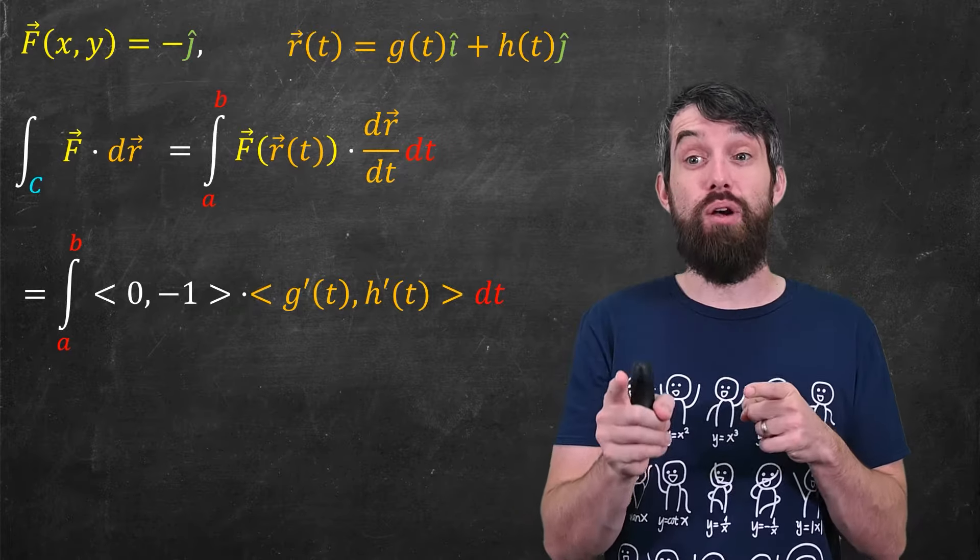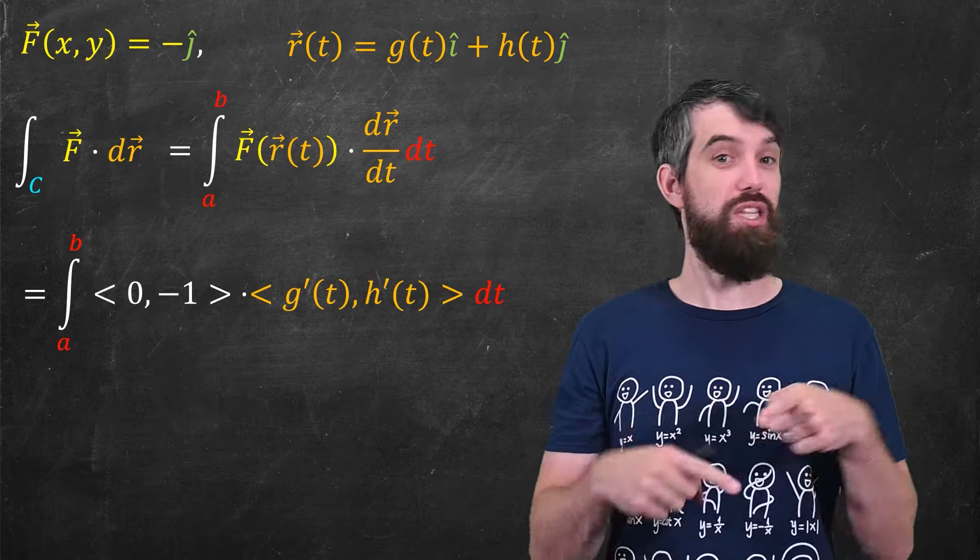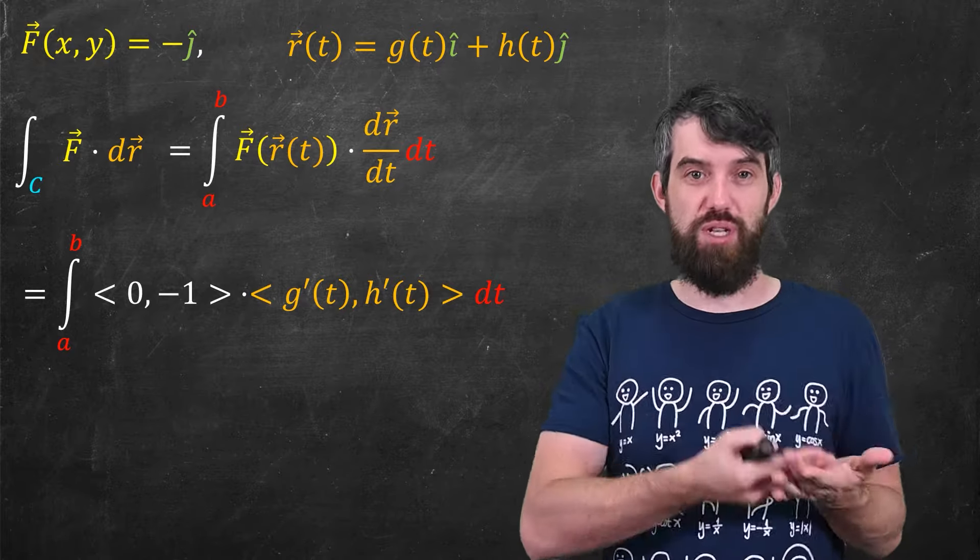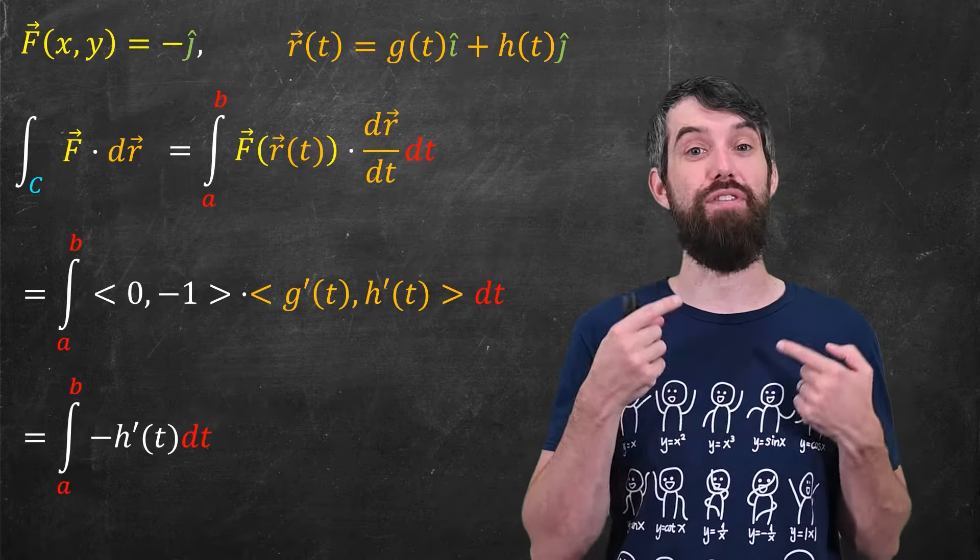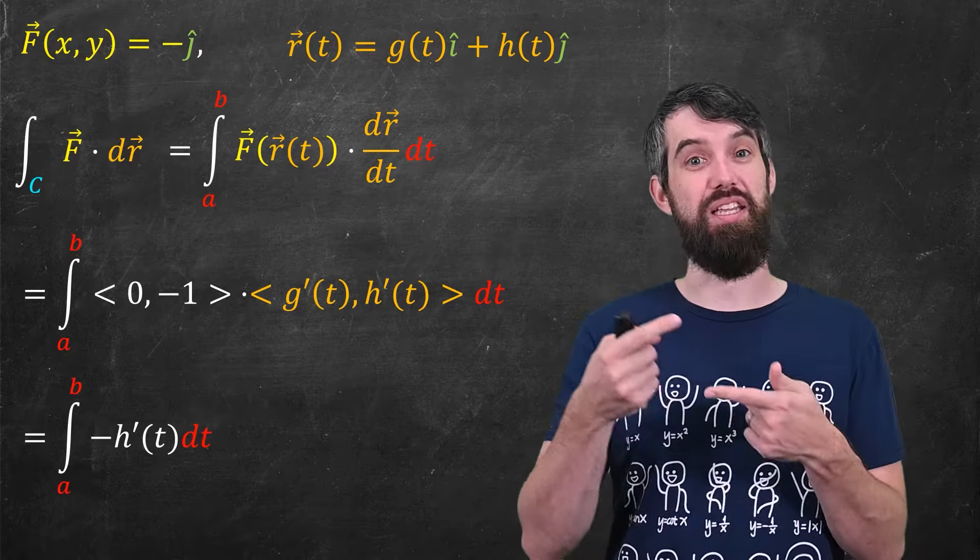And then I'm dotting it with dr dt, or r prime, which is just the derivatives component-wise. So the first component is g prime and the second component is h prime. Compute out the dot product and you get the integral from a up to b of negative h prime of t dt.